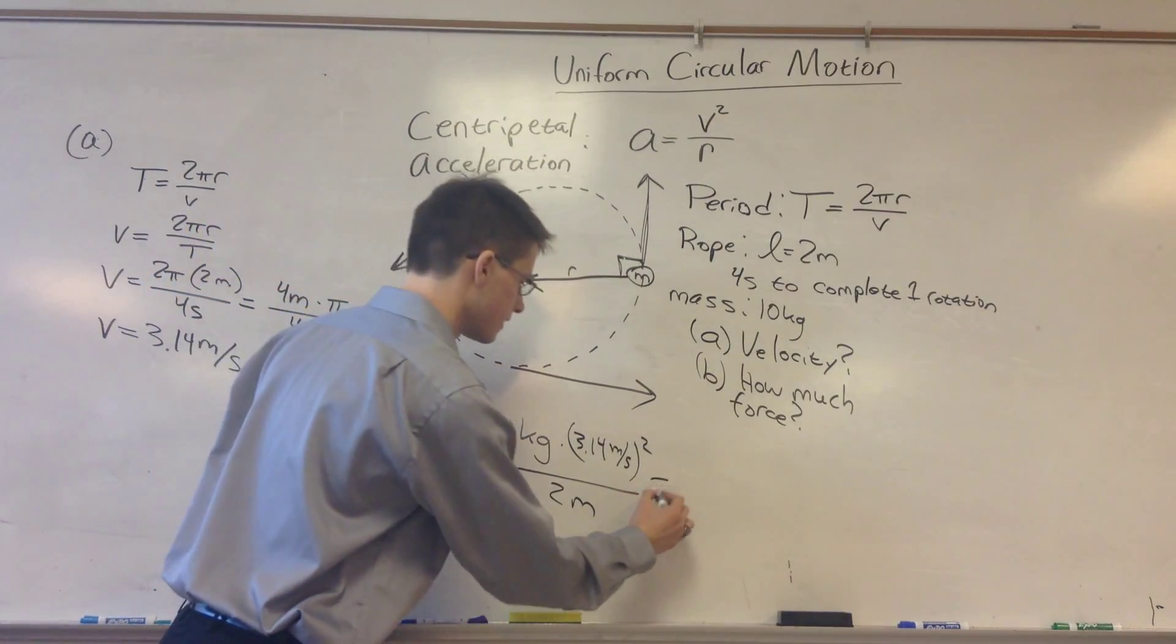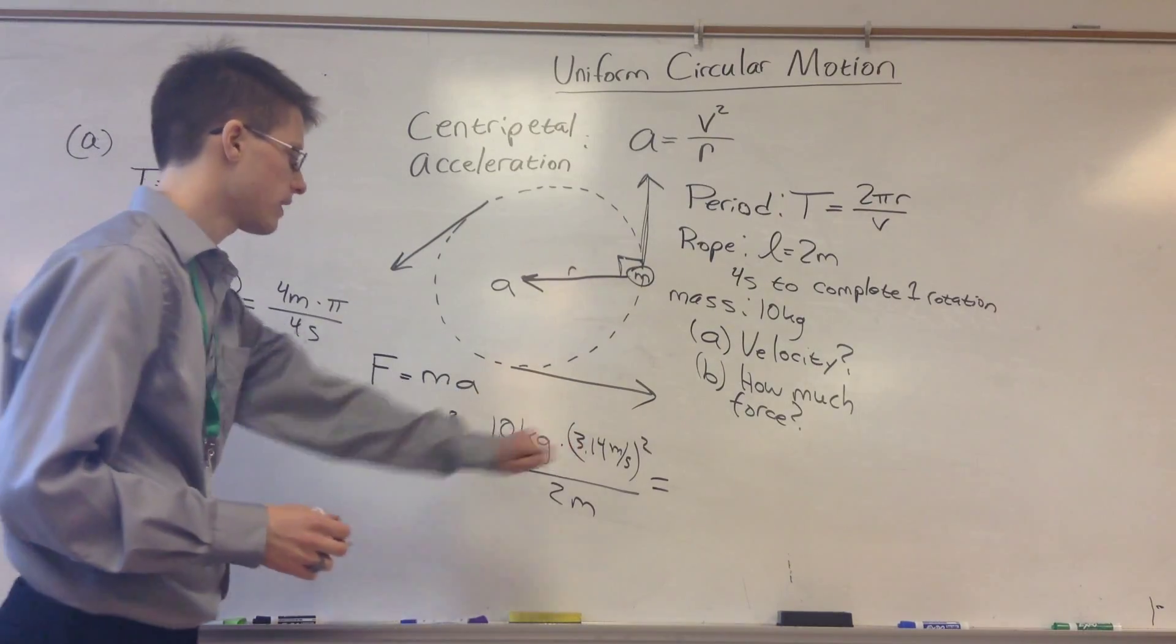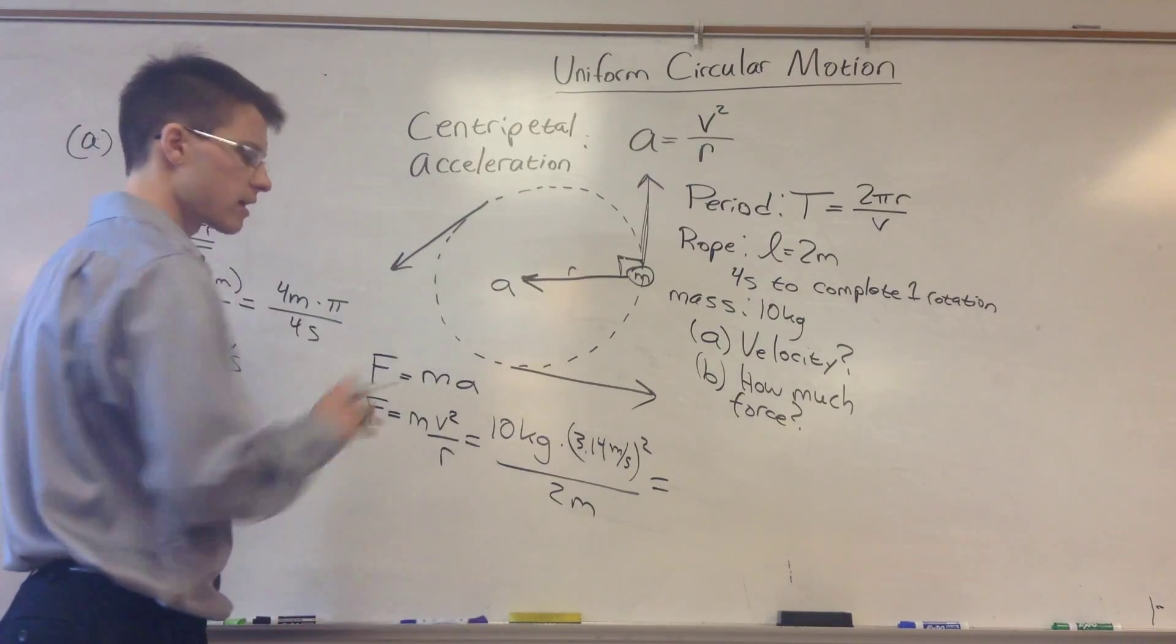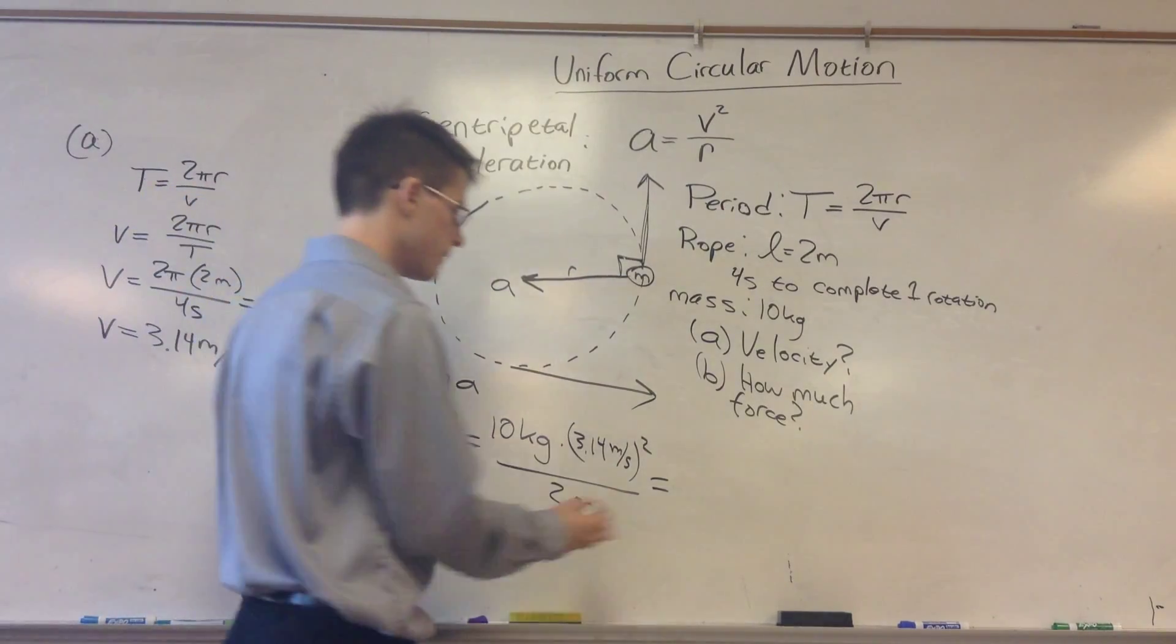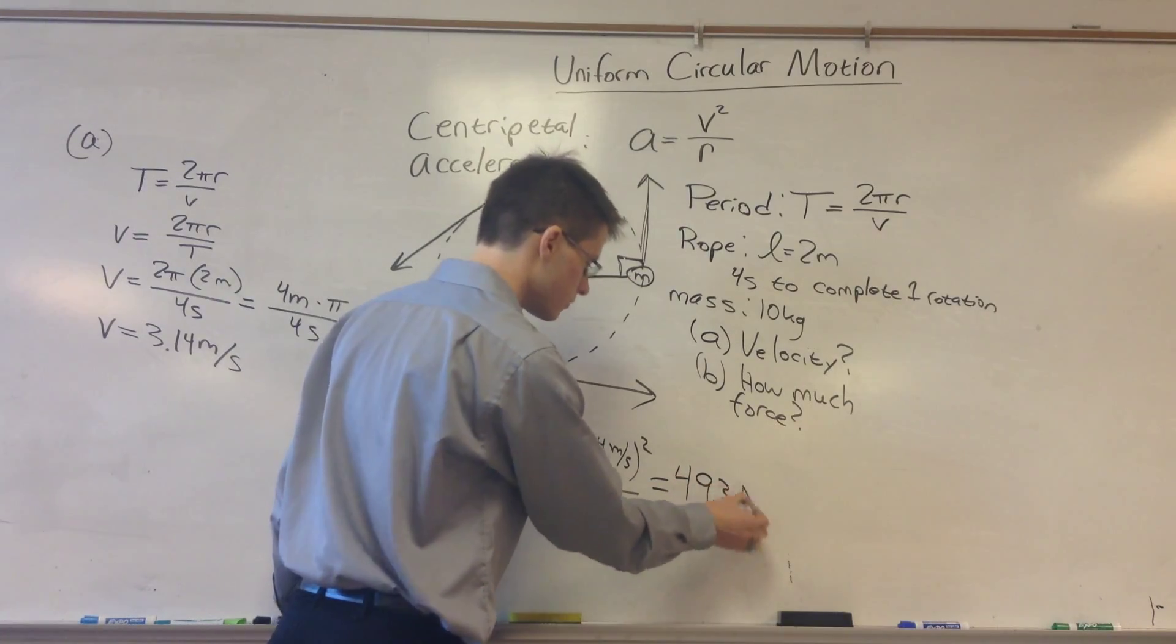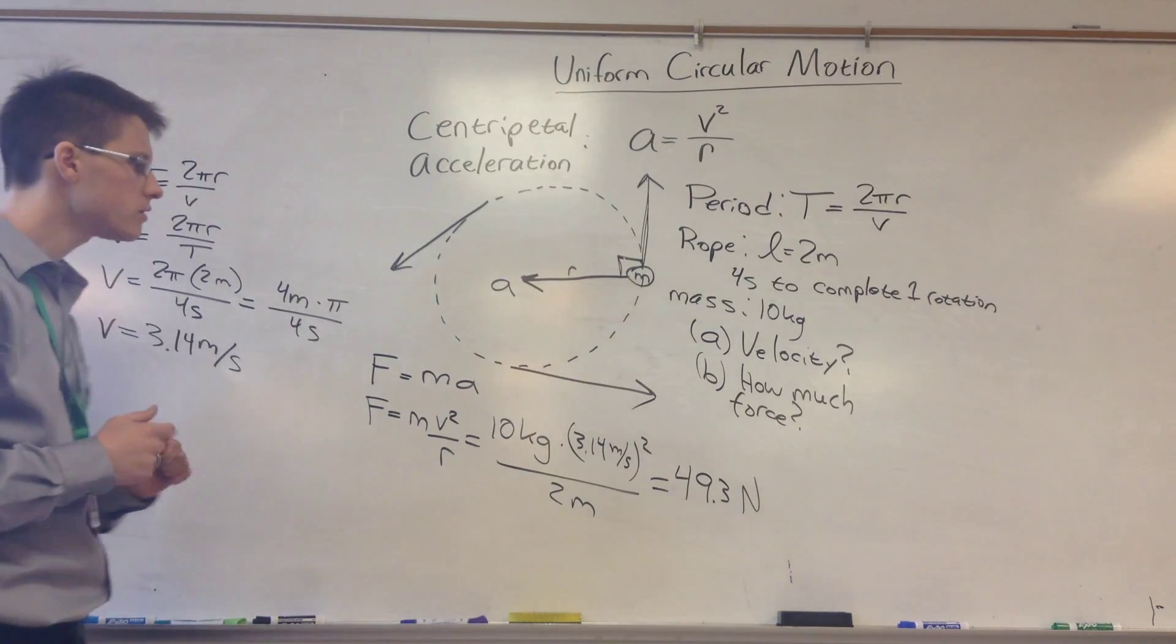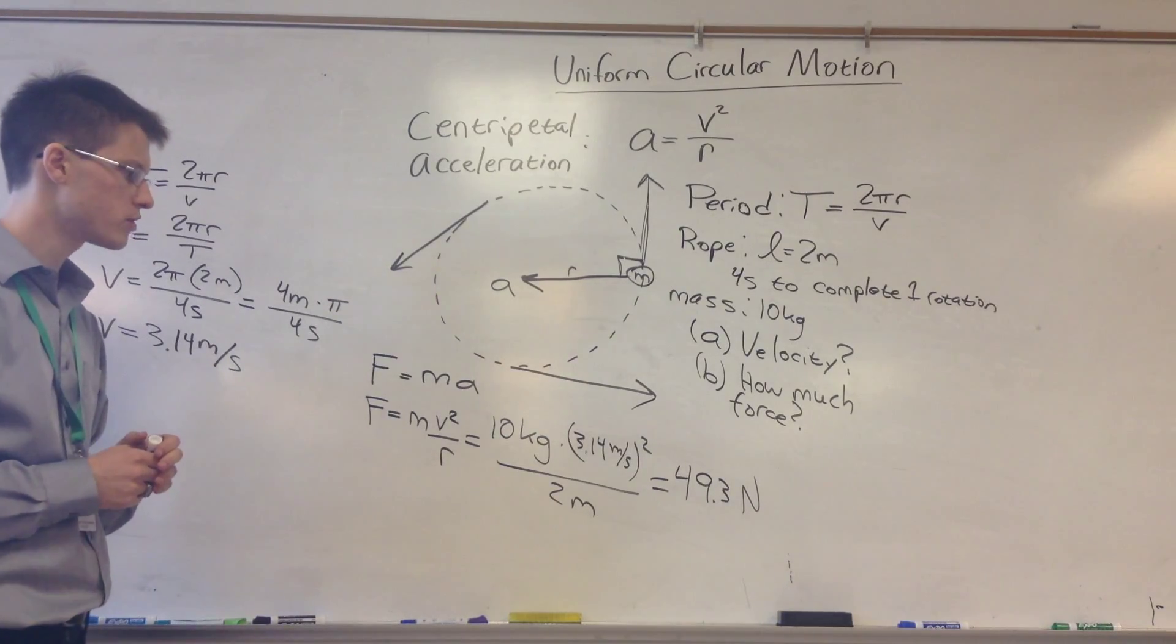So we can calculate this out on our calculators, or, you know, 10 over 2 is about 5, so 5 times 3 squared is about 9. So you're going to get a little bit greater than 45. You get probably 49.3 newtons, right around there. And newtons is the unit of force, and that works because that's what we should have.